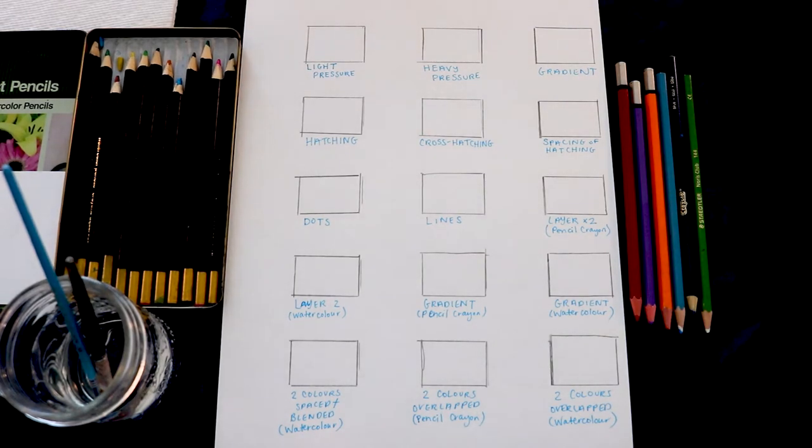Start off by drawing some boxes on a piece of paper. They don't have to be perfect. You can do different experiments in each box and label them so that you can refer back to them whenever you need to.